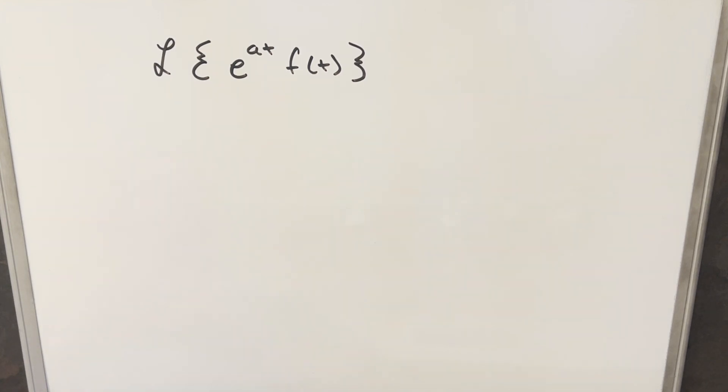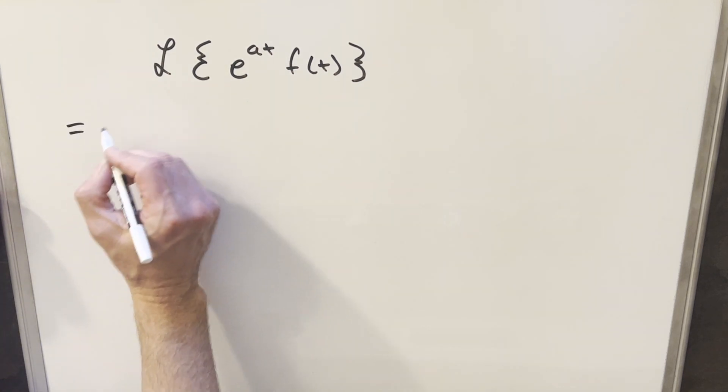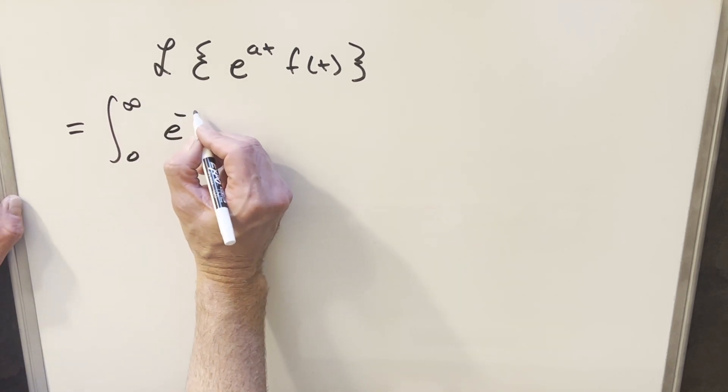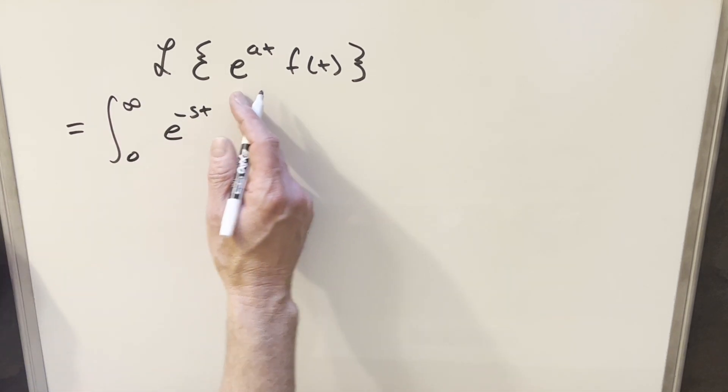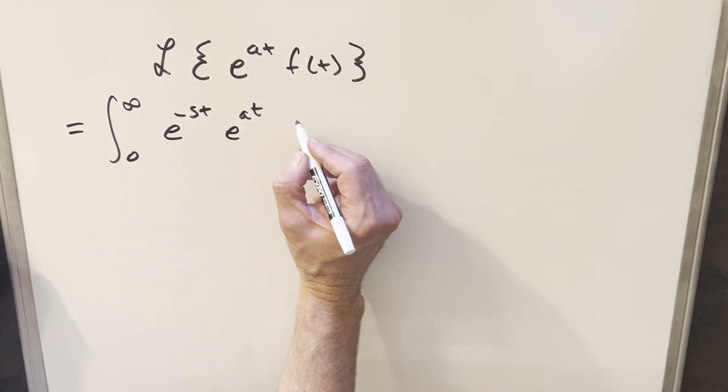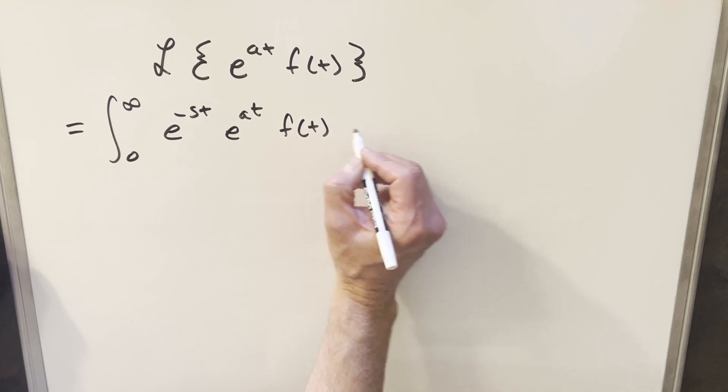This is going to be actually a really useful Laplace transform just because the exponential, we have the exponential function already in the Laplace transform. So anything with an e to the at seems to work pretty nice, but let's go to our definition and just work this out and see what happens. So we're always going to have e to the minus st times our function, which is going to be this whole thing.